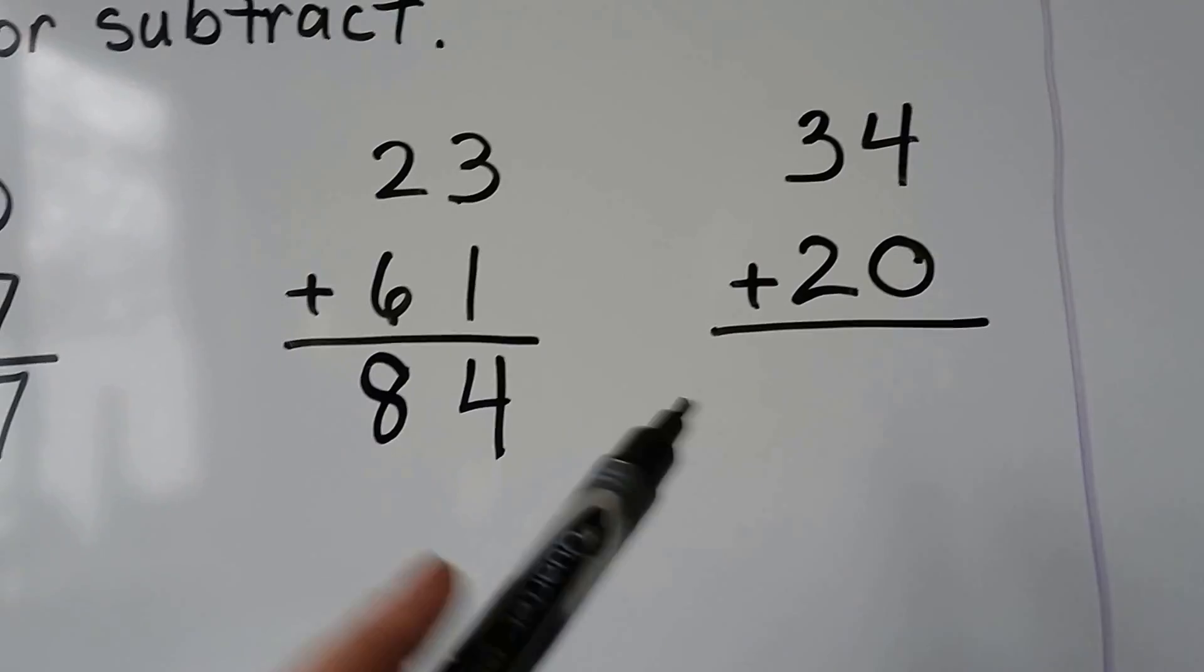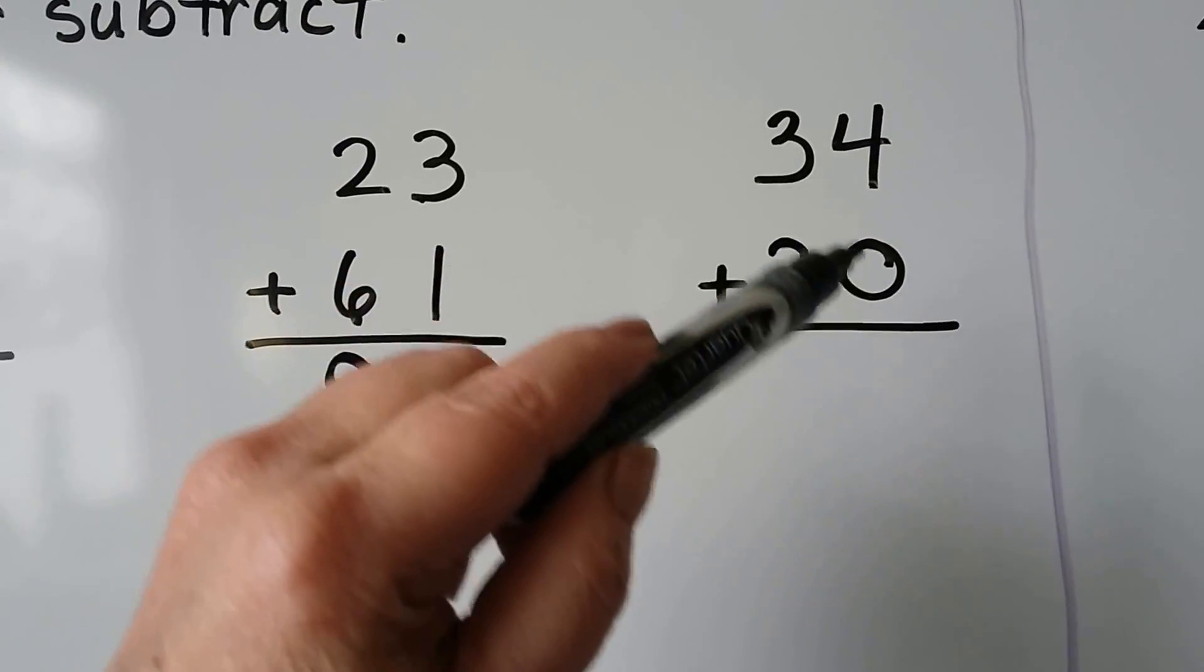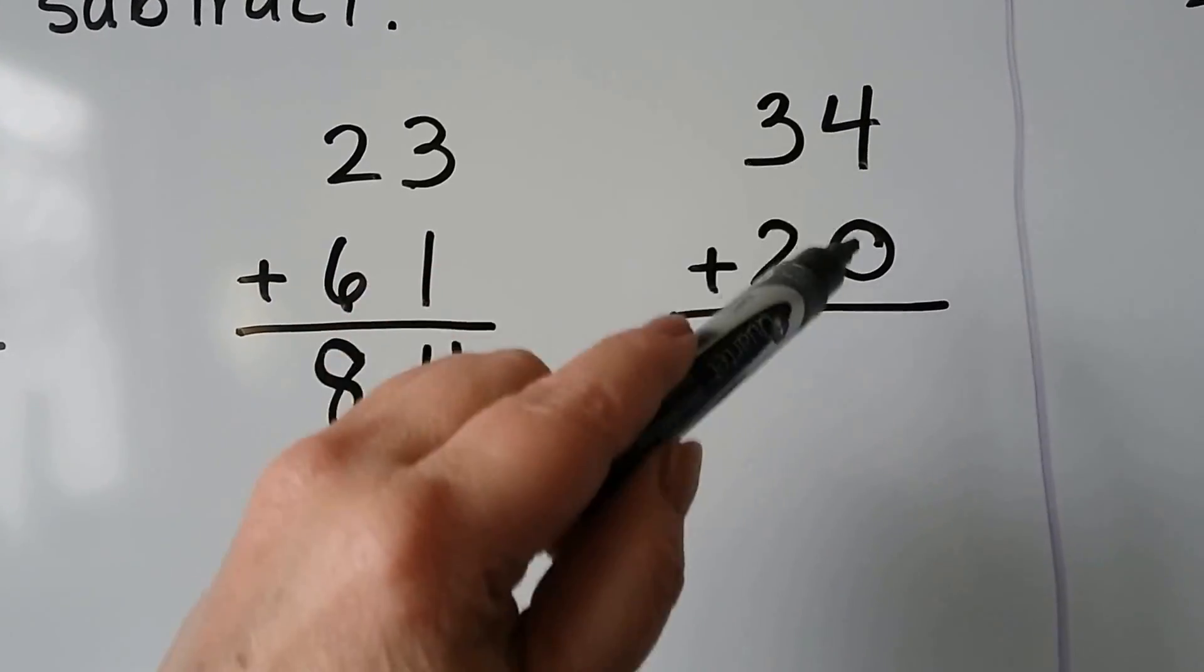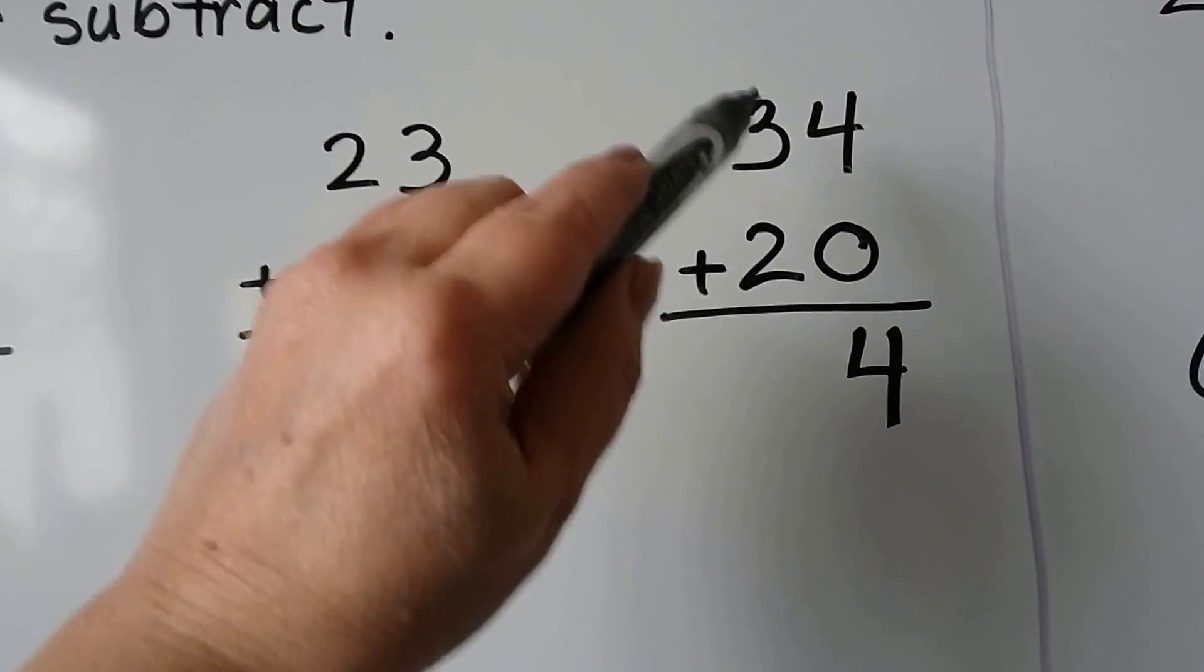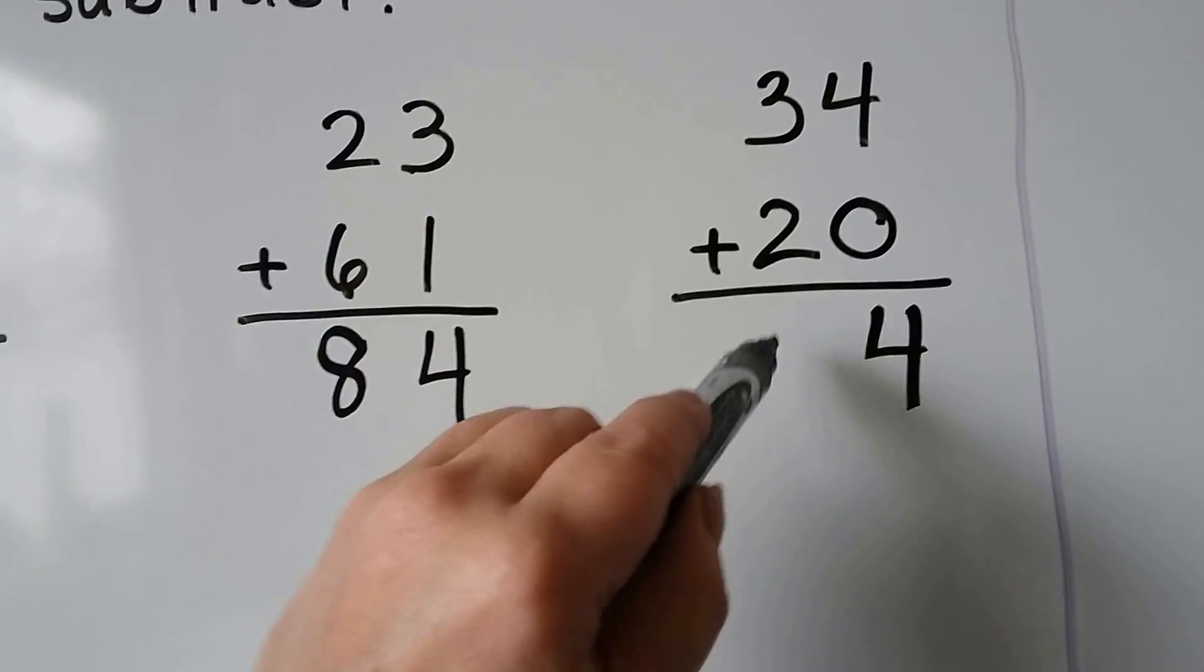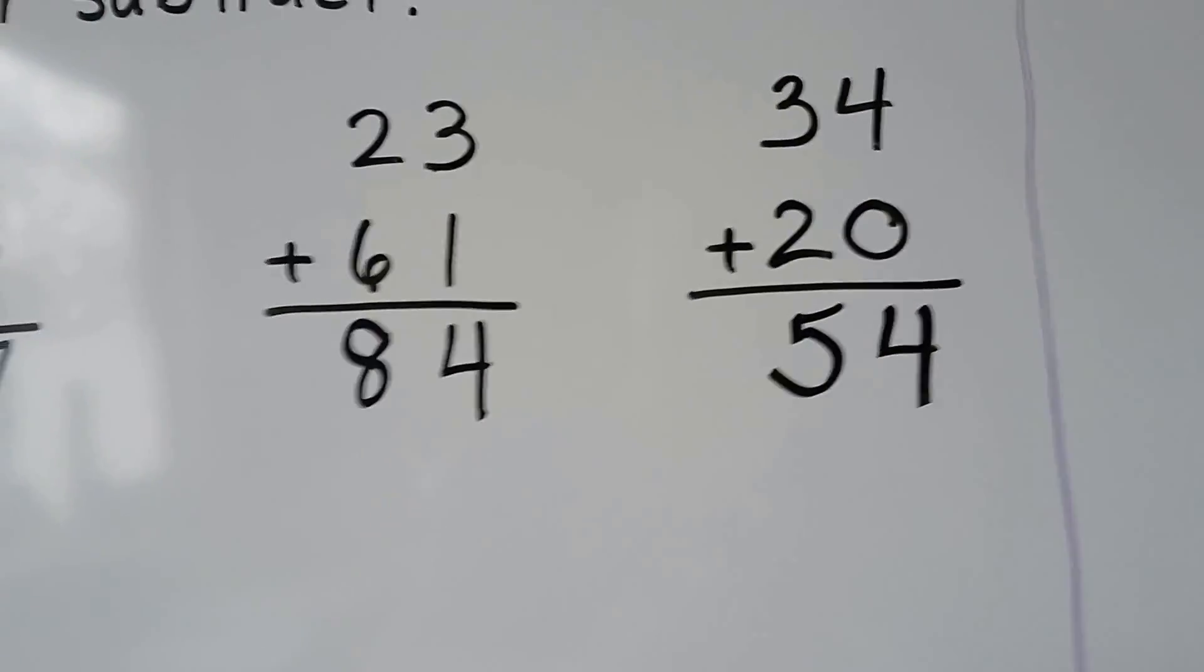34 plus 20. We start with the 1s. 4 plus 0. We're adding a 0, so the 4 stays the same. 3 plus 2 in the 10s place. That's a 5. It's equal to 54.